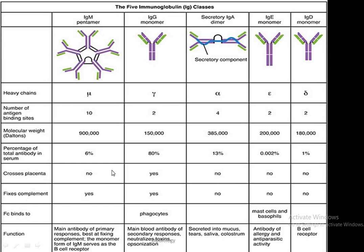Among these five classes, only IgG is able to cross the placental barrier. Comparing complement-fixing capability: only IgM and IgG have the power to fix complement; the others have no role in complement fixation.